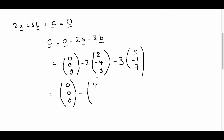2 times minus 4, which is minus 8. 2 times 3, which is 6. And then we have minus 3 lots of vector b, so we have minus 3 lots of 5, which is 15. 3 lots of minus 1, which is minus 3, and 3 lots of 7, which is 21.